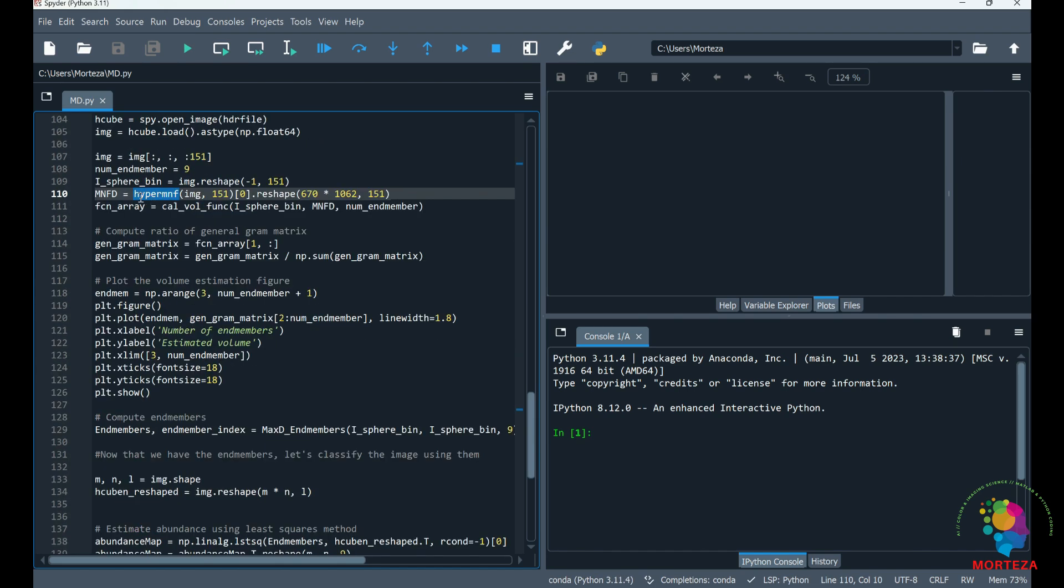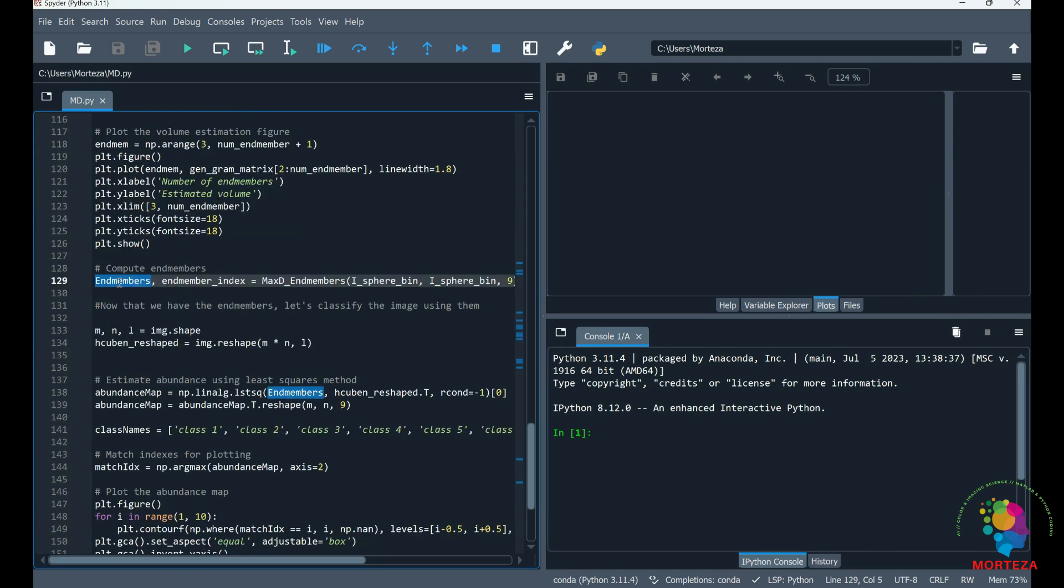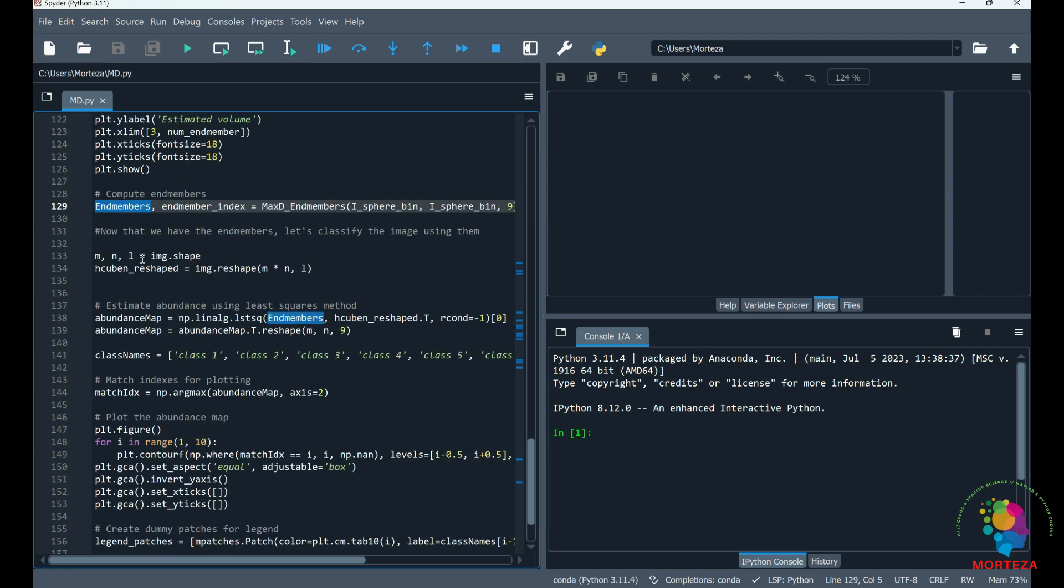Just one point about hyper_MNF: it uses maximum noise fraction to compute the principal components. It helps decorrelate and also rescale the noise. It also arranges principal components in decreasing order of image quality. Okay, now that we have the end members, we could use them to classify this hyperspectral image. For that, we just use maximum abundance, as I said before.